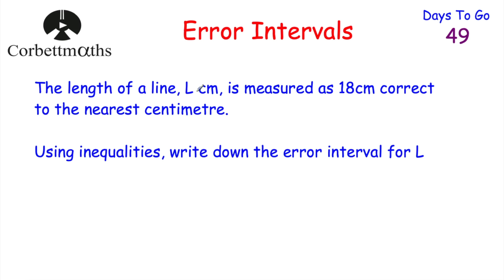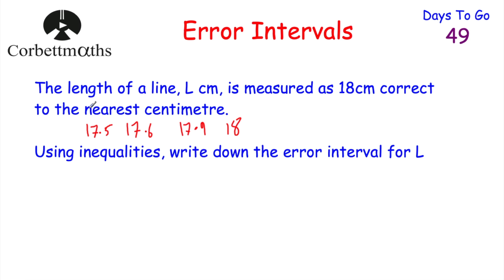Today we're going to look at error intervals. Our first question says the length of a line L centimetres is measured as 18 centimetres correct to the nearest centimetre. Whenever this line is measured and rounded to the nearest centimetre, it's 18 centimetres. We've been asked to use inequality notation to write down the error interval for L. Let's start by considering what length the line could be. It could be exactly 18 centimetres, it could be 17.9 centimetres, 17.6 centimetres, or even 17.5 centimetres, but it couldn't be anything below this — for instance 17.49 centimetres would round down to 17, not 18.